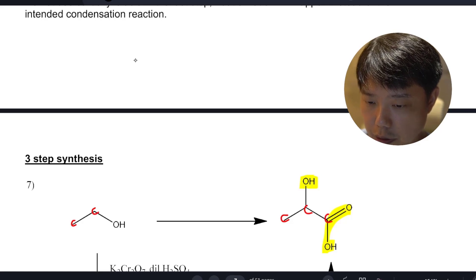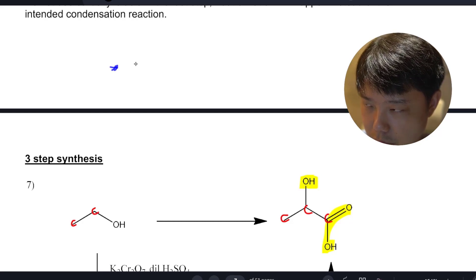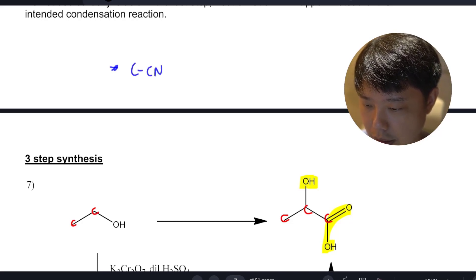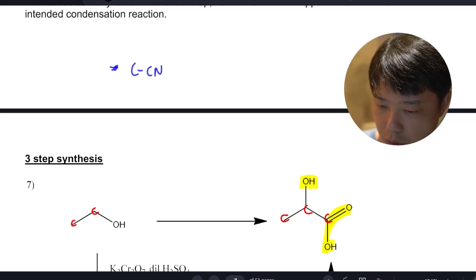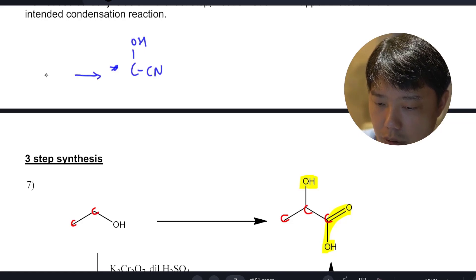Remember your nitrile, when you step up. So you have your KCN, then you have your OH. So how do you get to this nitrile group from your carbonyl?